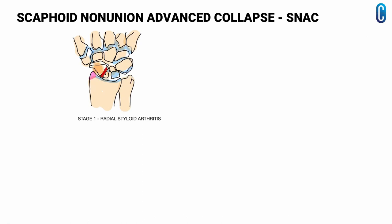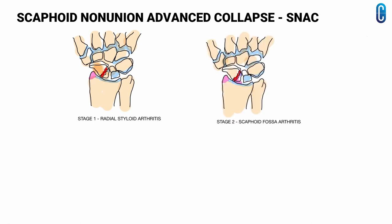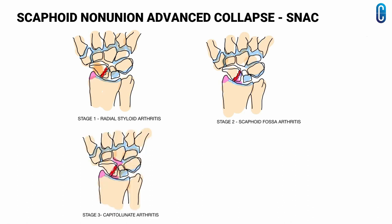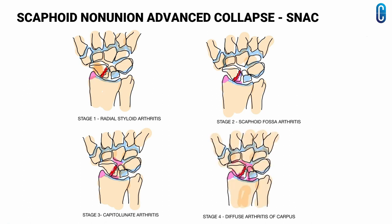We will see the stages of scaphoid nonunion advanced collapse, popularly called SNAC, which is osteoarthritis of the radiocarpal joints occurring as a consequence of the scaphoid fracture. Stage 1 is arthritis at the radial styloid. Stage 2 is arthritis in the scaphoid fossa. Stage 3 is capitolunate arthritis. Stage 4 is diffuse arthritis of the carpus.